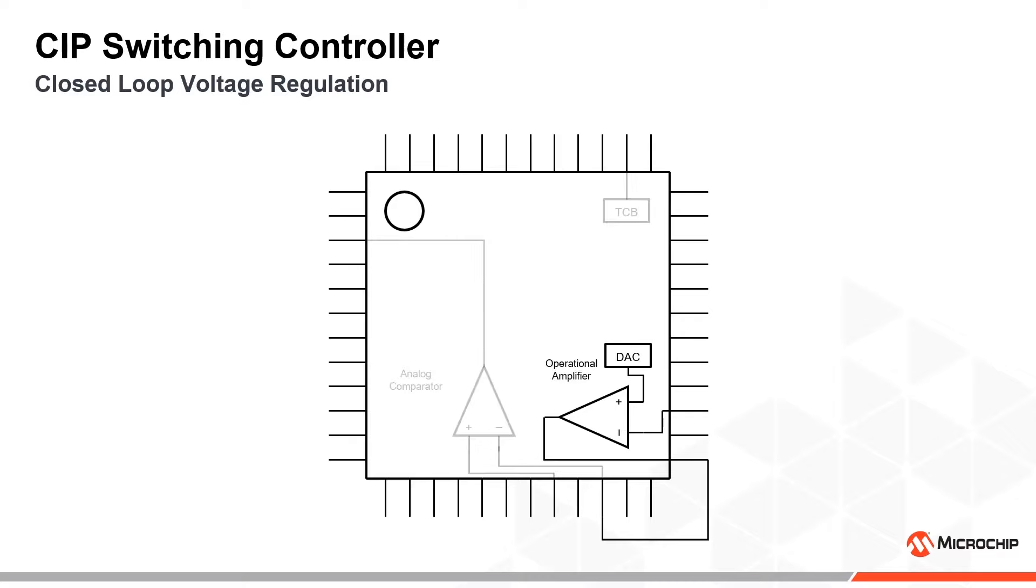The op-amp is set up as an error amplifier and will output the deviation between the actual and desired output voltage by referencing it to a voltage provided by the digital to analog converter.